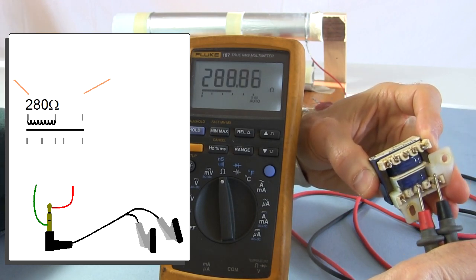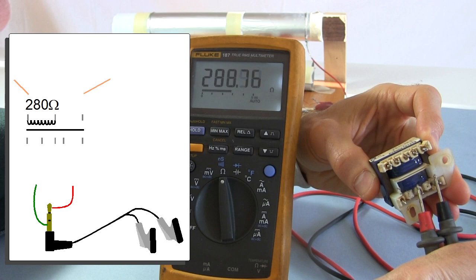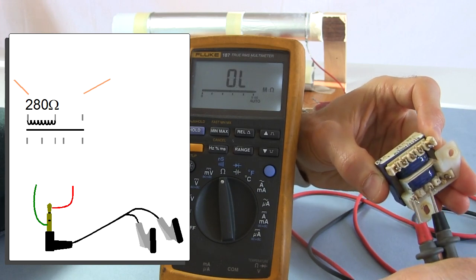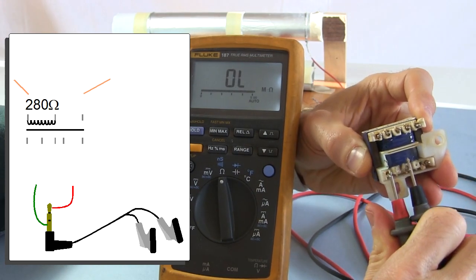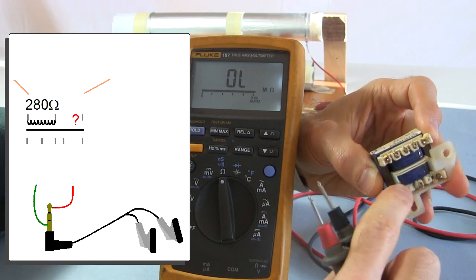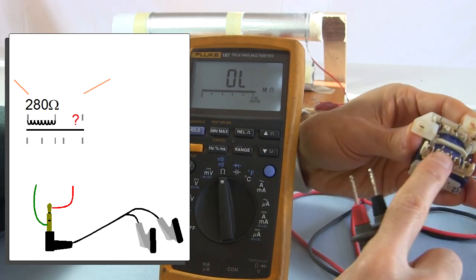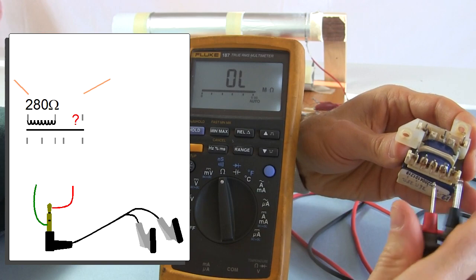So these two are connected together. There's around 280 ohms right there. But I find that these two are not. So there's infinite resistance right there. So I don't know what this one's connected to. And then I go around for all these other pins too and do the same thing.